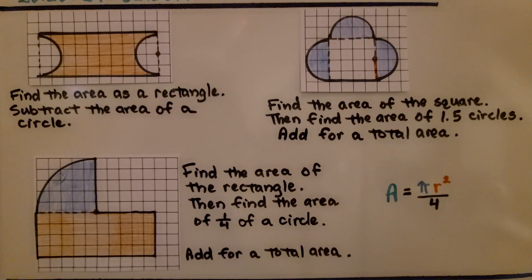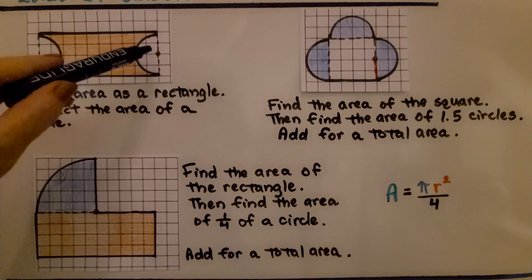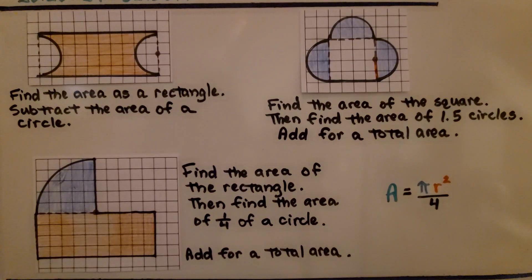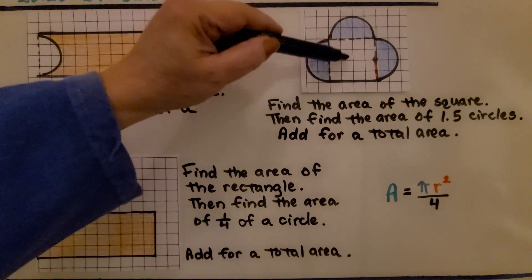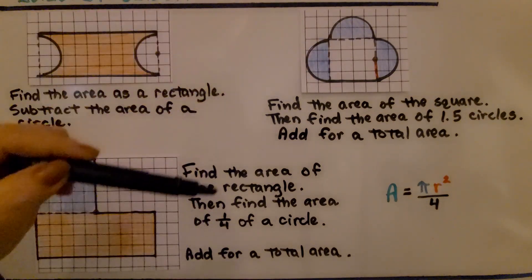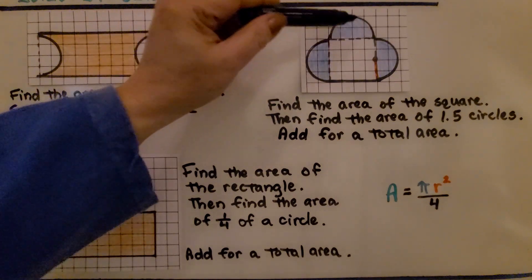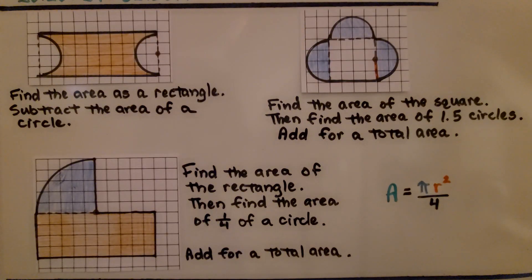As we're doing area of two-dimensional figures, we're going to come across some very irregular, odd shapes. Look at this one. If we actually look at this, we can look at it as a rectangle and subtract the area of a circle. We have a semicircle and a semicircle. That means we're going to subtract the area of one full circle. Now for this one, we find the area of the square. Then we find the area of one and a half circles. We can do the area of one full circle and a half circle, and we add them together for a total area.